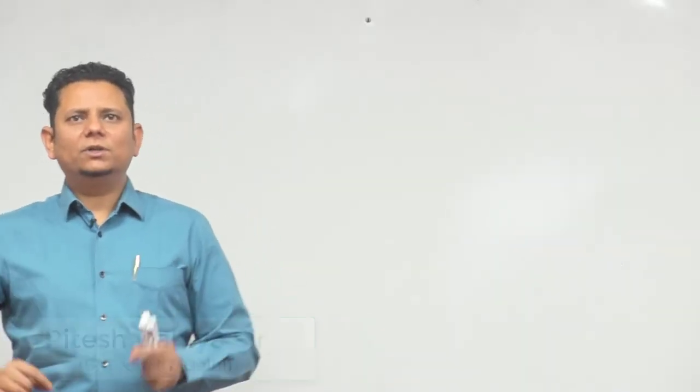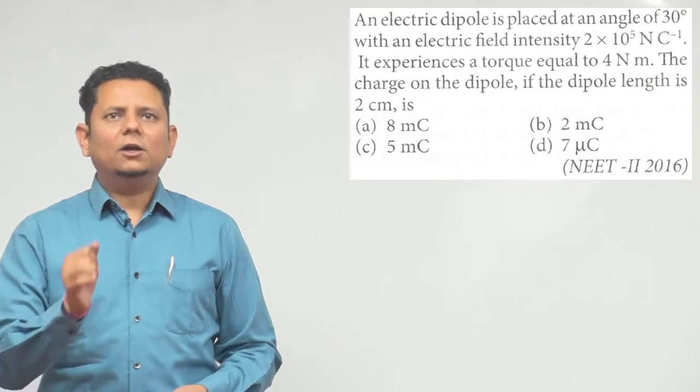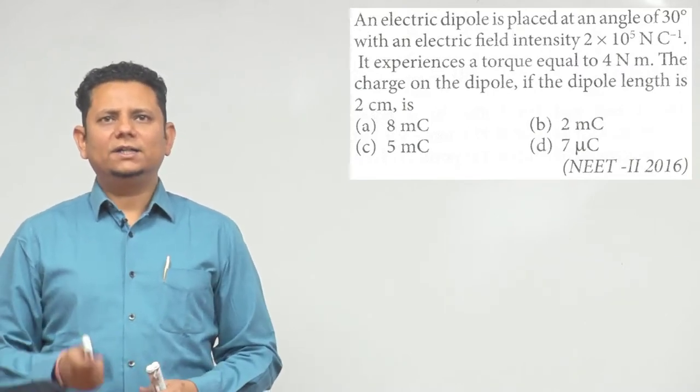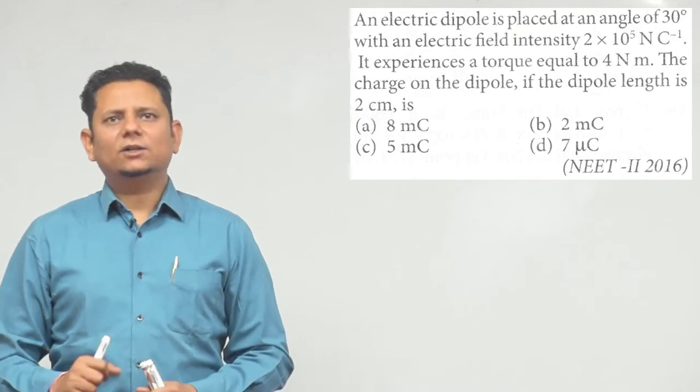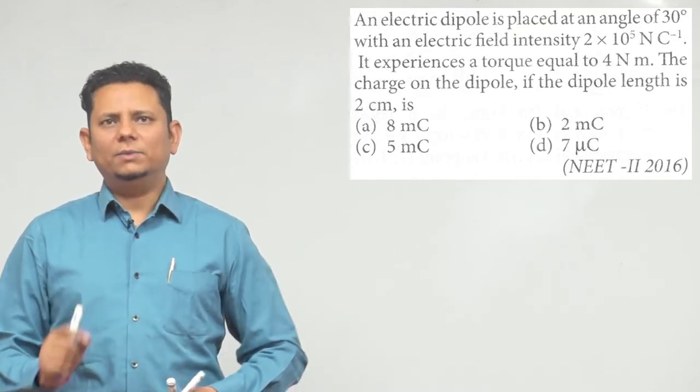Next question: An electric dipole is placed at an angle of 30 degrees with an electric field intensity 2×10^5 Newton per coulomb. It experiences a torque of 4 Newton meter.